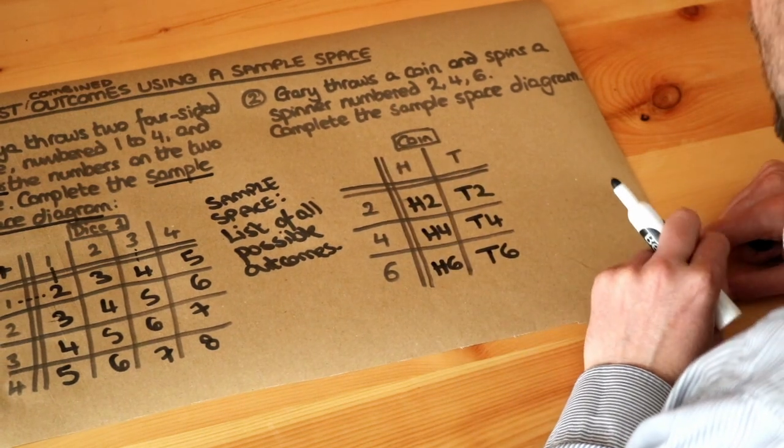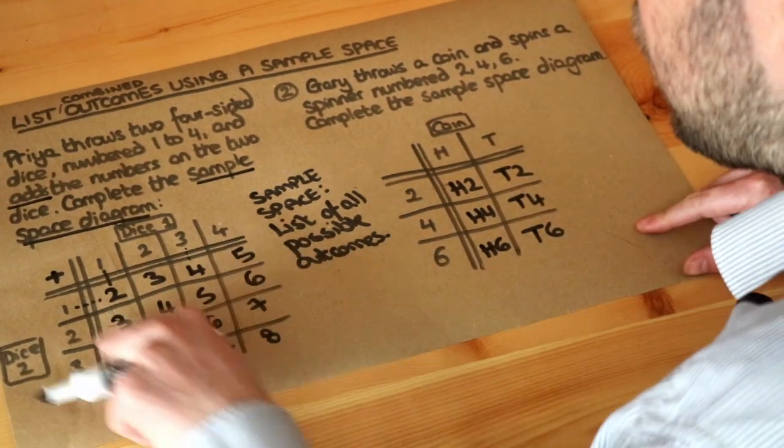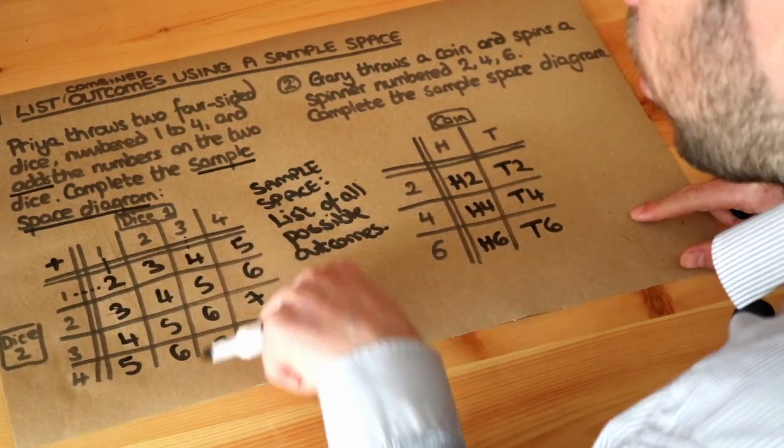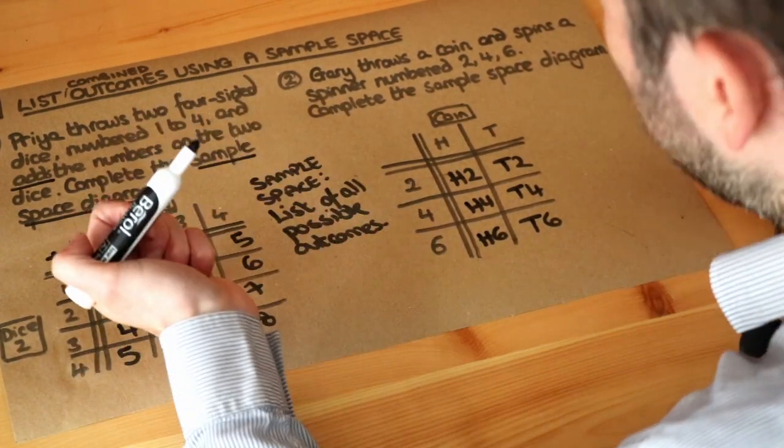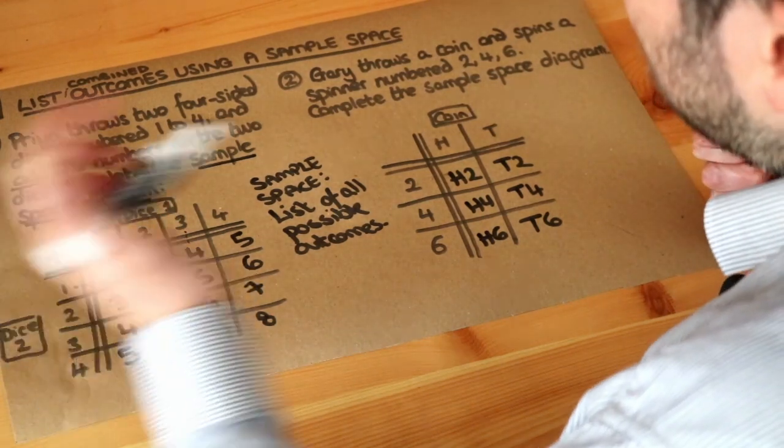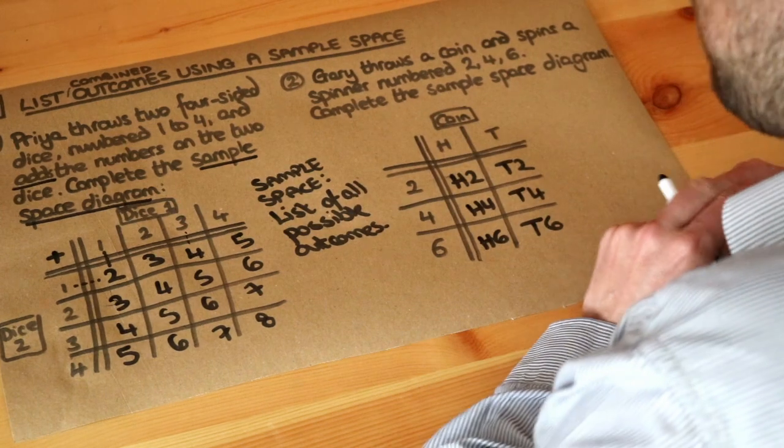What we're doing in a subsequent video is looking at how we can use this sample space diagram to work out certain probabilities. For example, we could work out what's the probability when we throw two dice and add the outcomes together that we get at least a six as a combined total on the two dice. That's the kind of thing we'll be able to work out.